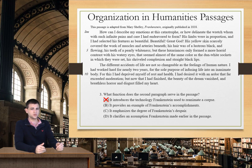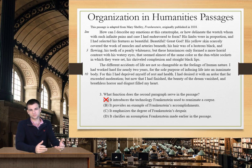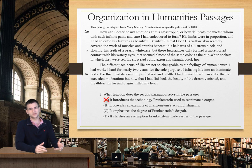B says the second paragraph provides an example of Frankenstein's accomplishments. That's not really accurate either. In the second paragraph especially, he's not really describing any of his accomplishments. He's really just lamenting his decision — what he thinks is a bad decision at this point. So it's not giving us any example of his accomplishments, and B is incorrect as well.